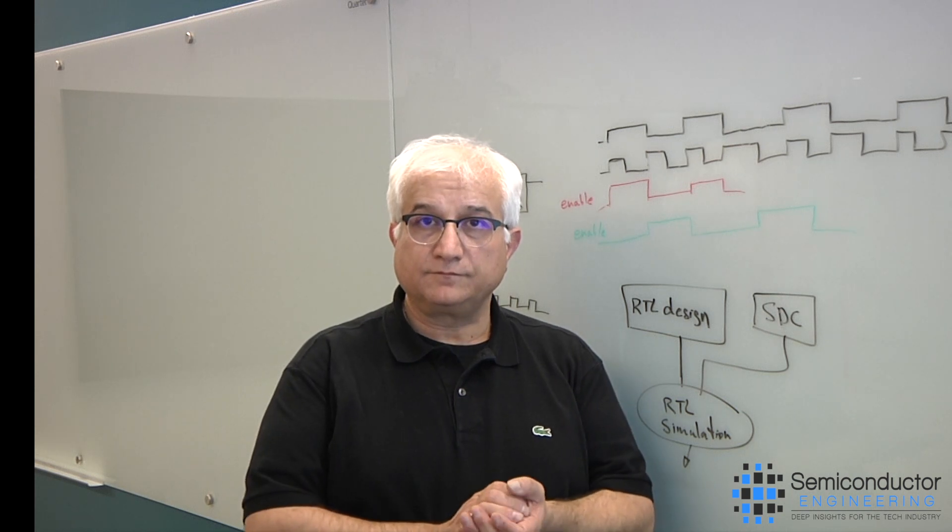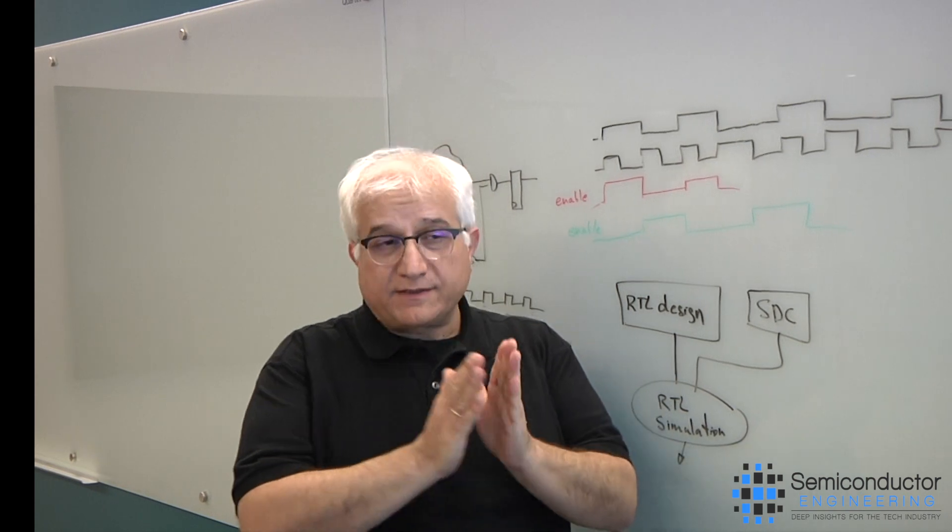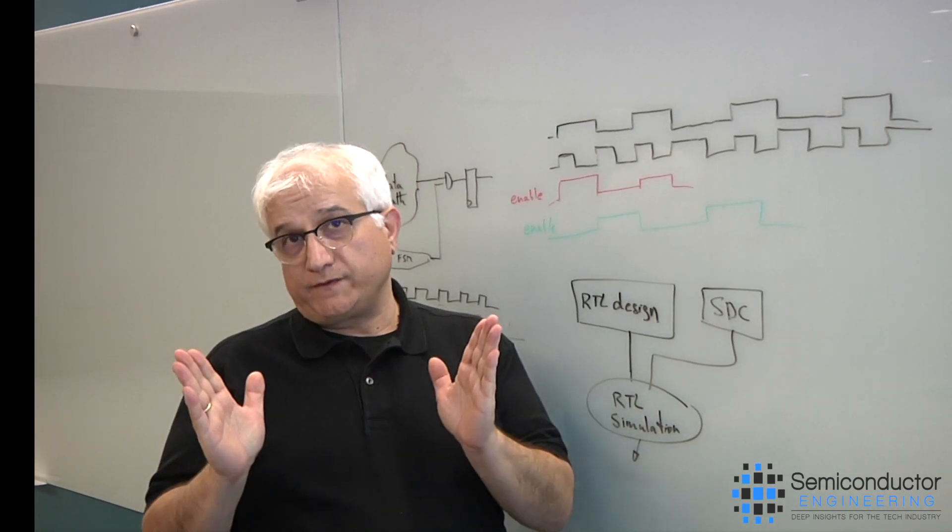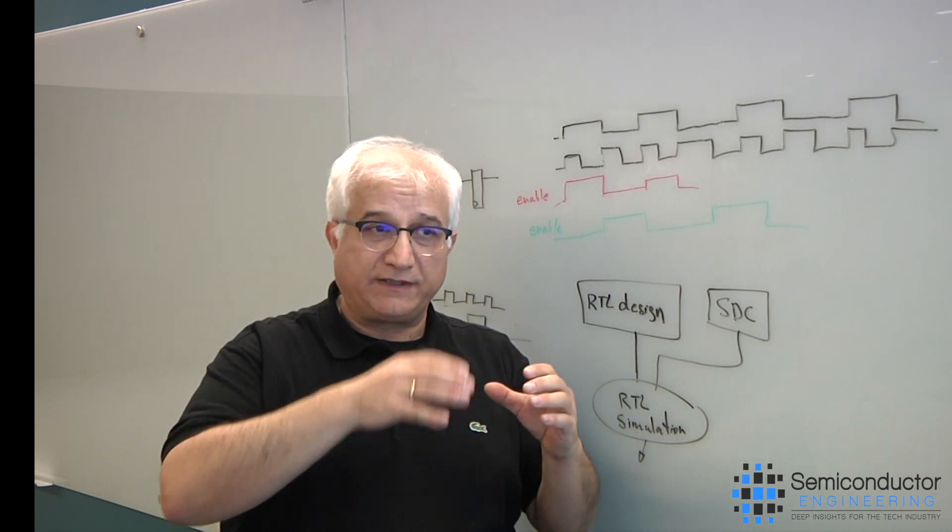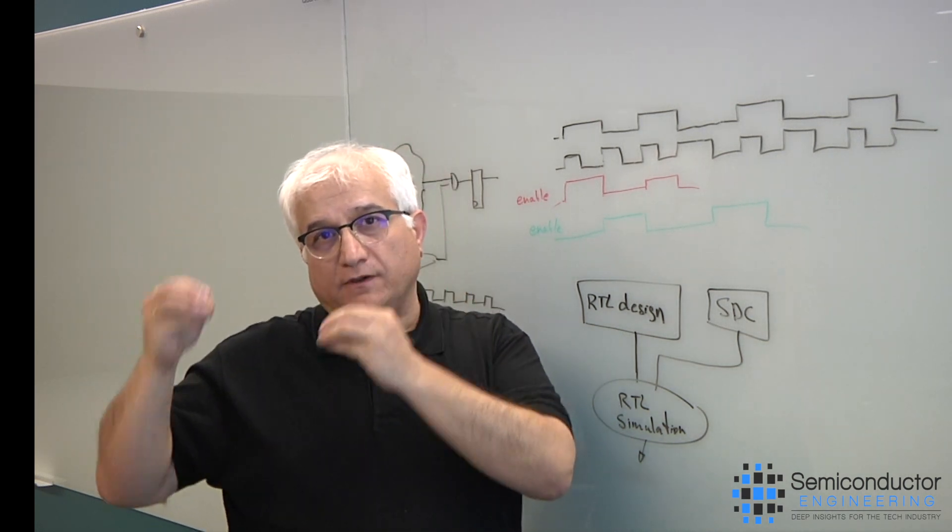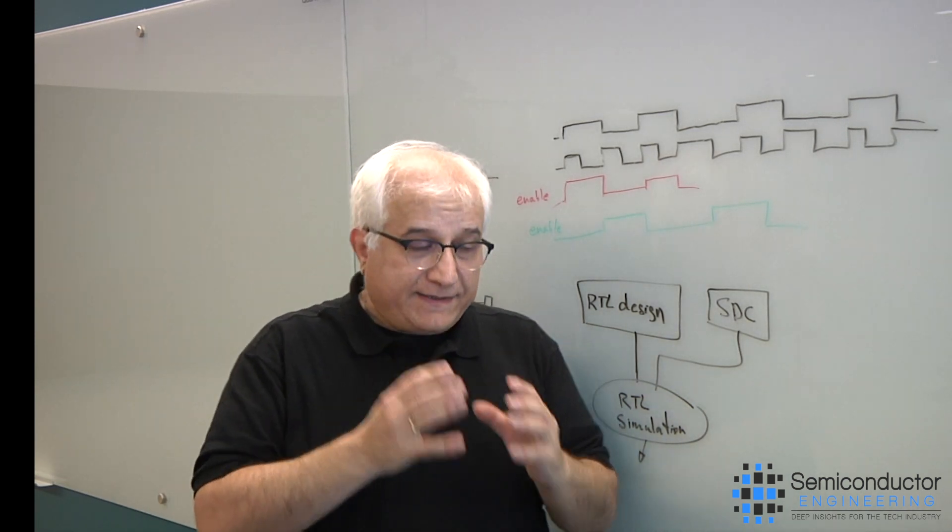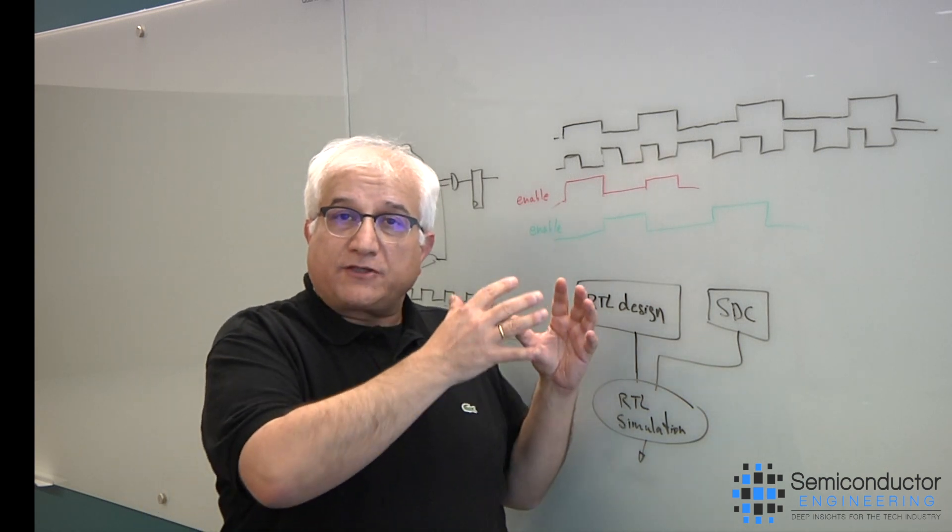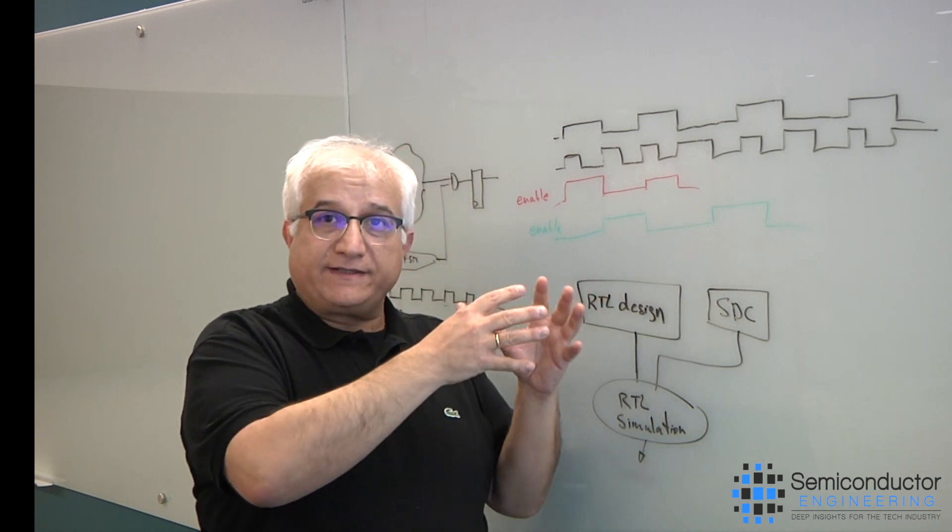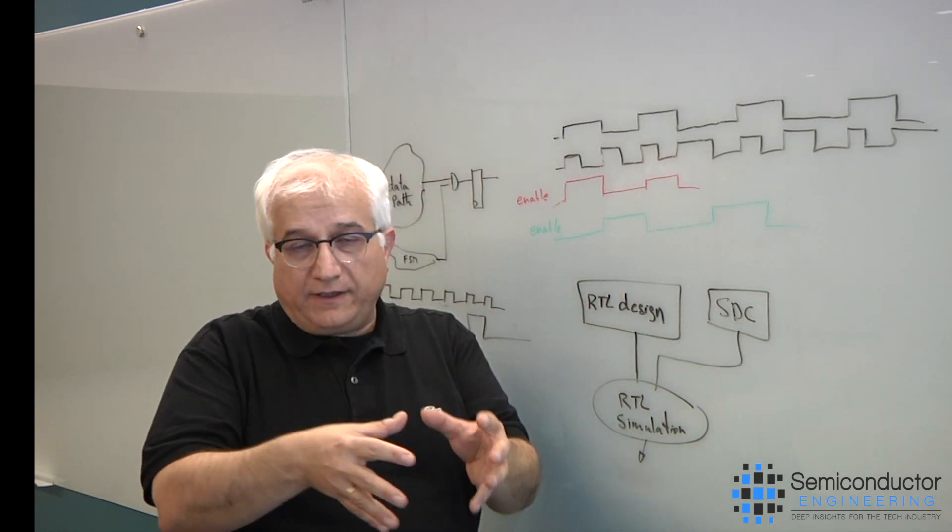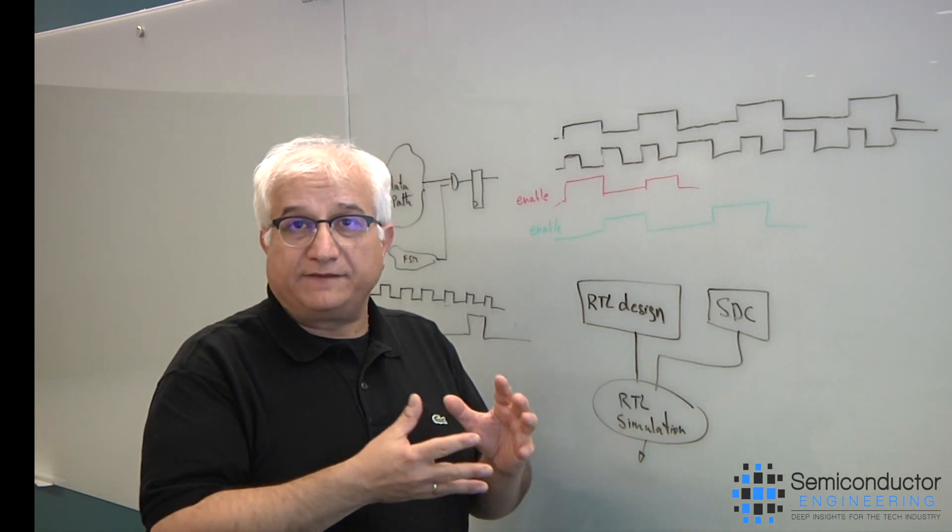So given all of these complexities, what's the solution? The solution is what we always call shift-left, because gate level simulation is very time-consuming and it's very slow. And because of the complexity, as you brought up, multiple IPs, et cetera, the debugging, if something goes wrong, the debugging is very complex and time-consuming. That is the reason that we have to make sure, whatever you are simulating, whatever you are synthesizing, the constraint that you are setting, we are simulating accordingly during RTL simulation.